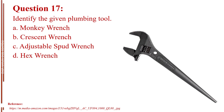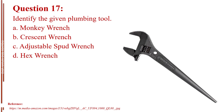Question number seventeen. Identify the given plumbing tool. Letter A, monkey wrench. Letter B, crescent wrench. Letter C, adjustable spot wrench. Letter D, hex wrench. The answer is Letter C, adjustable spot wrench.